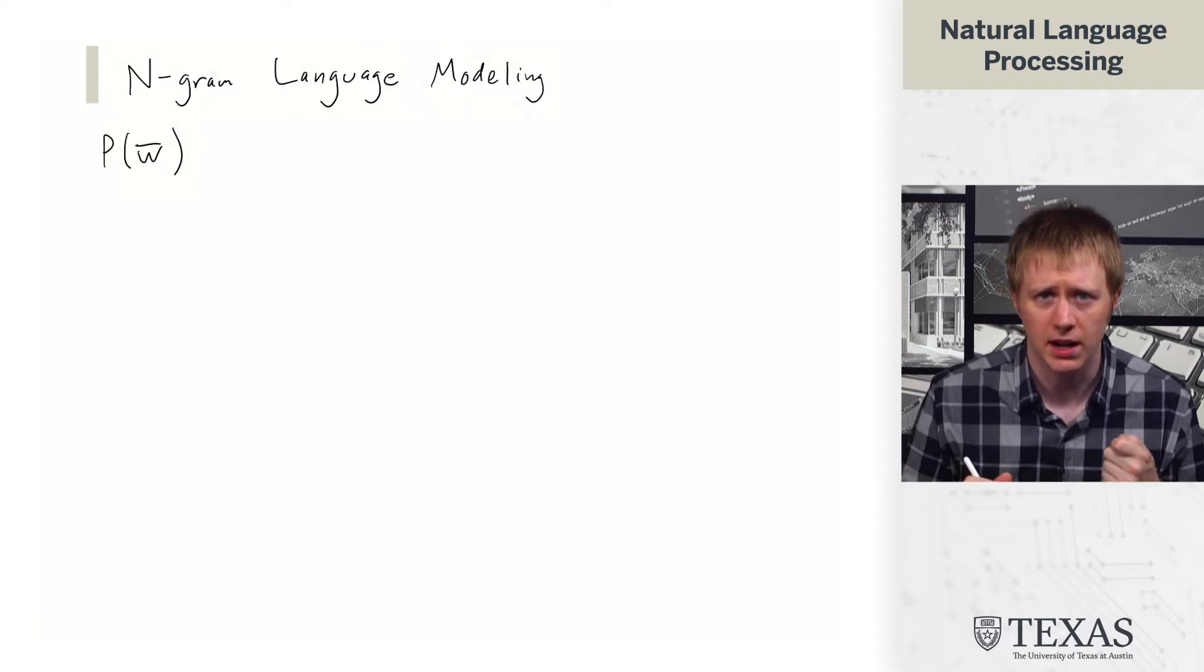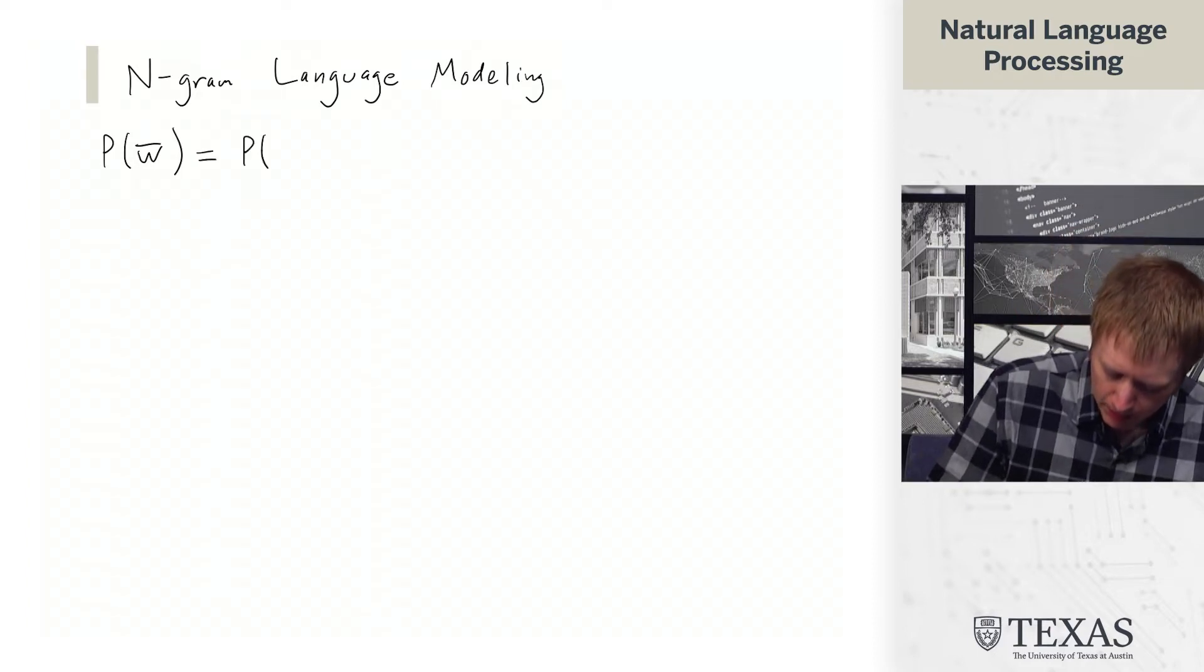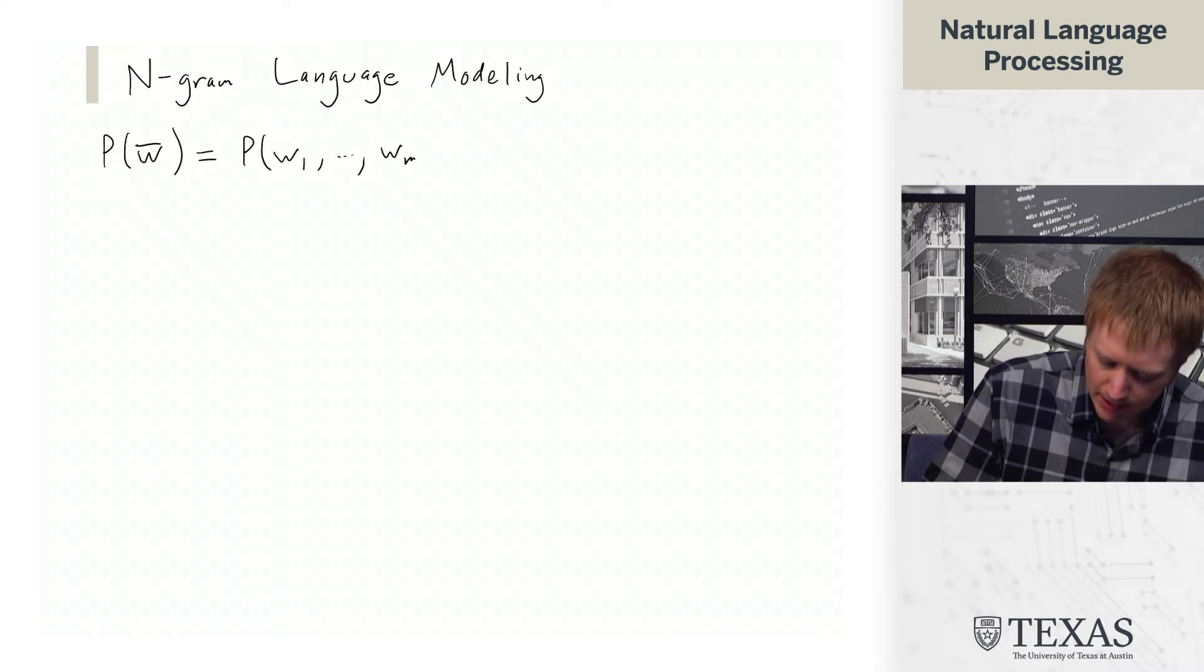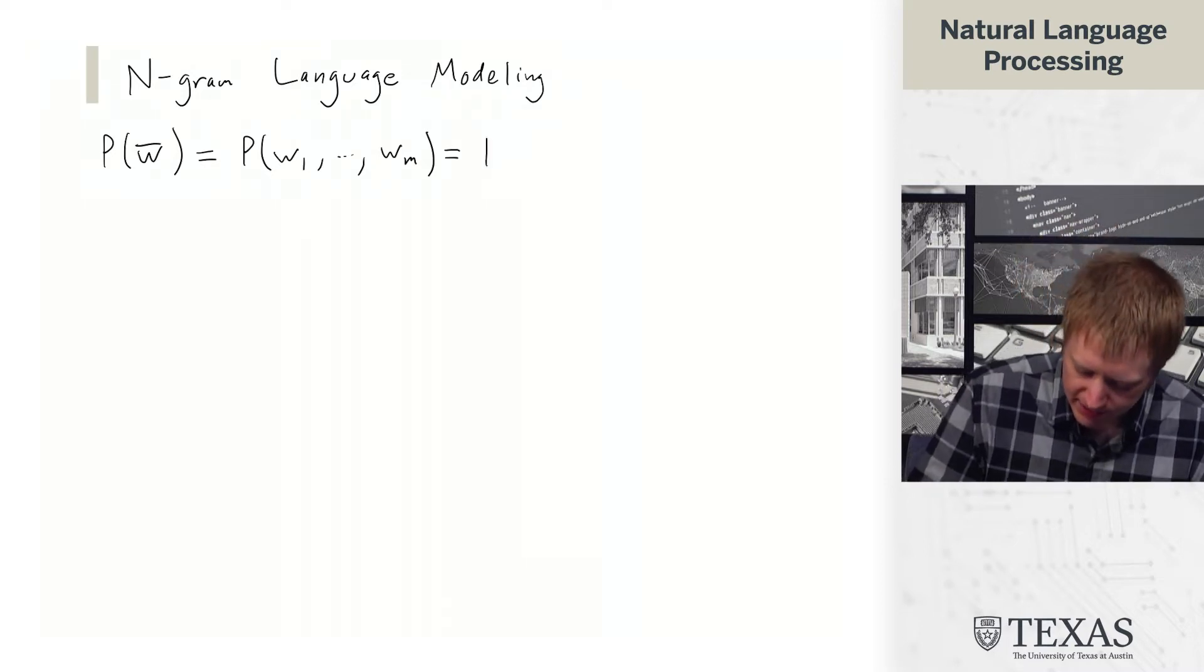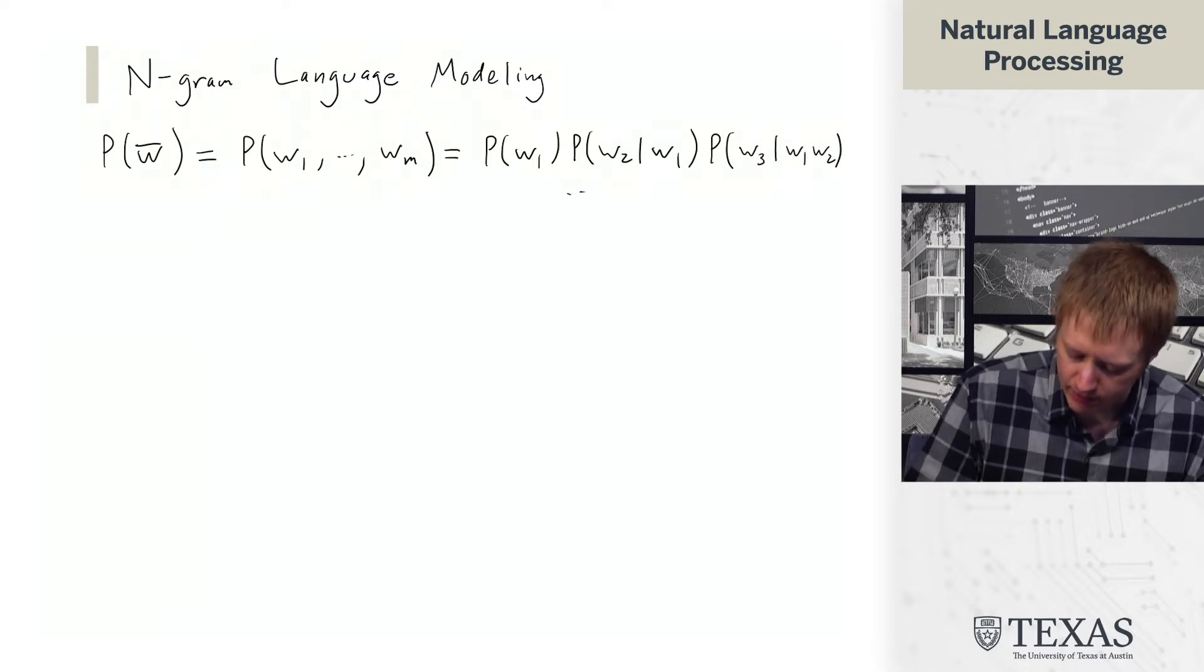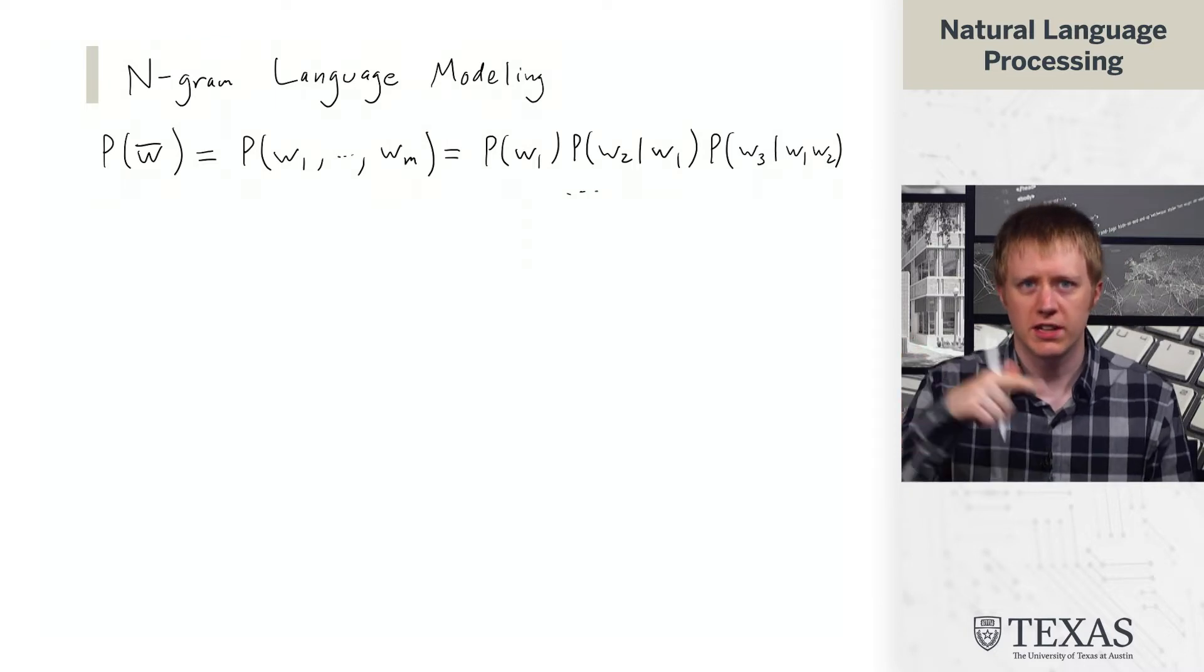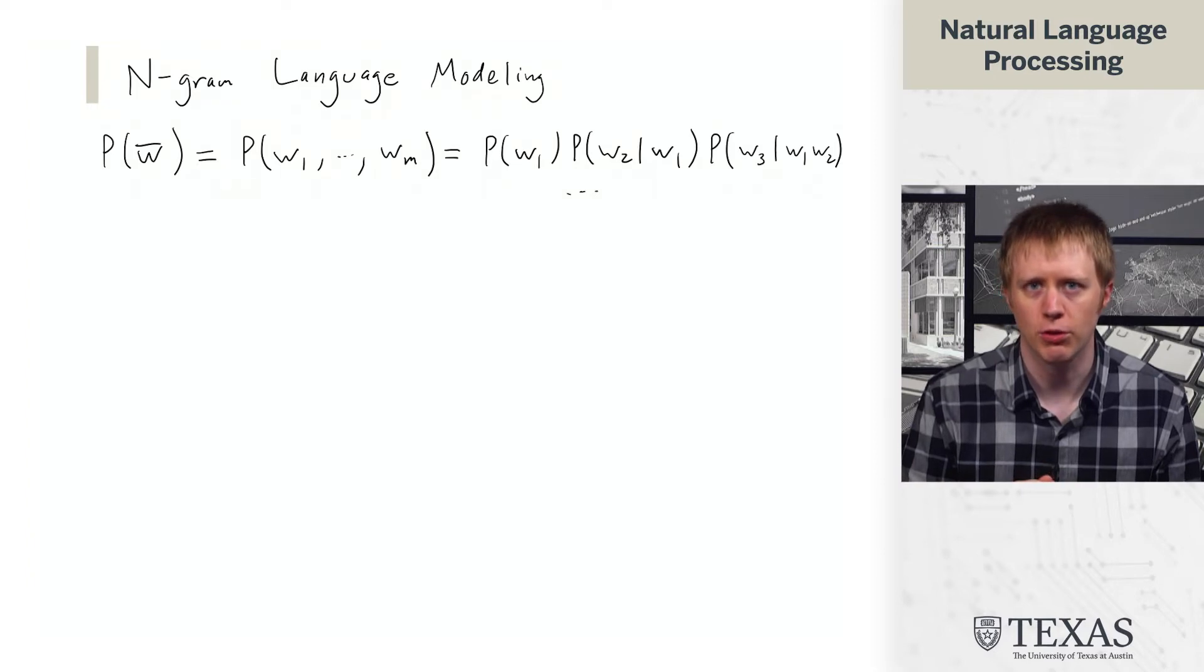N-grams are going to do something a little bit simpler. We are going to say that the probability of a sequence of words, which I'll write out explicitly as w1 through wm, can be written as just the product of each word conditioned on the previous words using the chain rule. So essentially each word conditions on all of the past words so far, and this is just true because of the chain rule of probability.